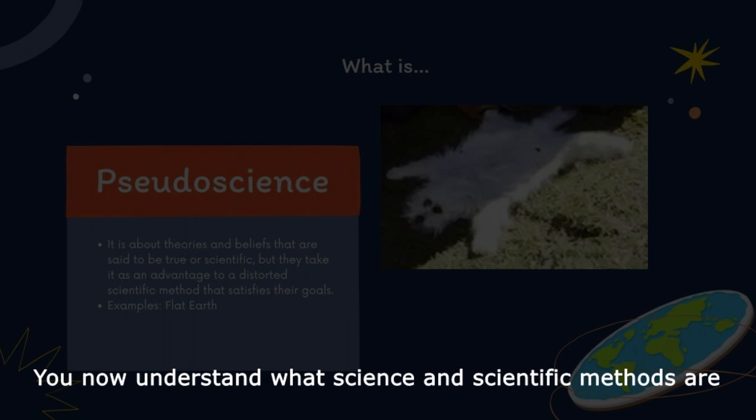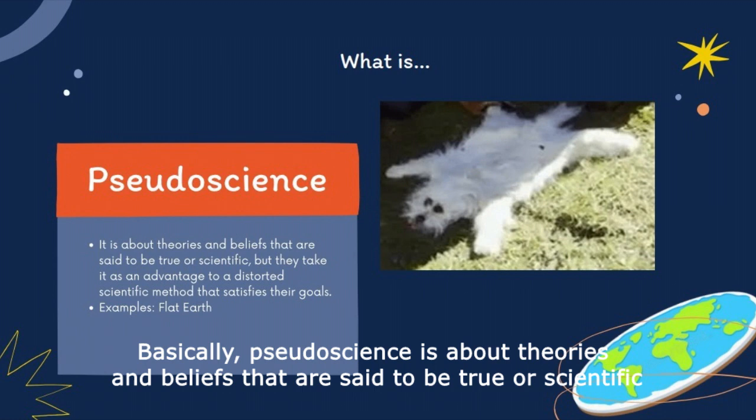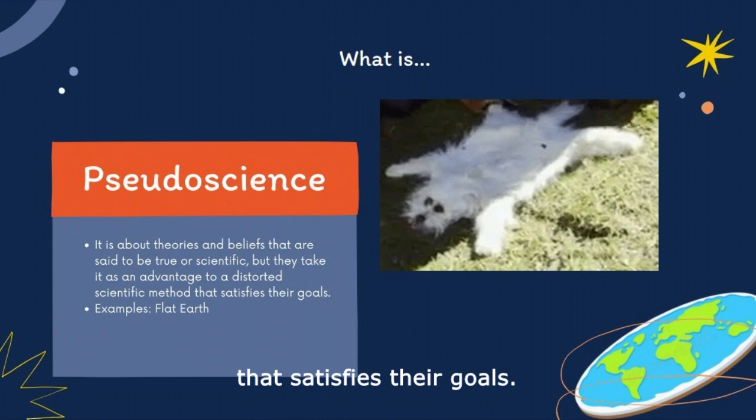You now understand what science and the scientific method are — but what about pseudoscience? Basically, pseudoscience is about theories and beliefs that are set to be true or scientific, but they take advantage of a distorted scientific method that satisfies their goals.